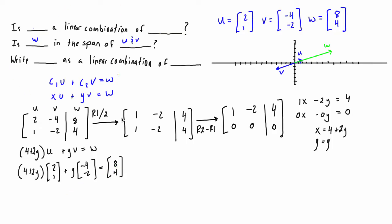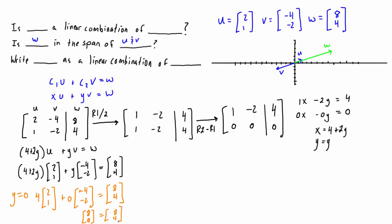Let's verify that. Let's pick an easy one — y equals 0. For y = 0, the y-term goes to 0, so we just have 4 times the vector (2, 1), plus 0 times (-4, -2). Is that equal to (8, 4)? Well, 4 times 2 is 8, and 4 times 1 is 4 — so yes, we get (8, 4) equals (8, 4). That checks out. So that's just one example of one possible combination.